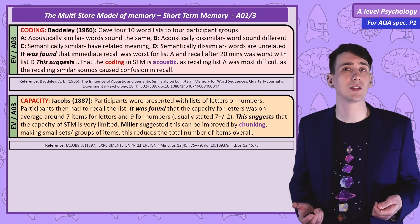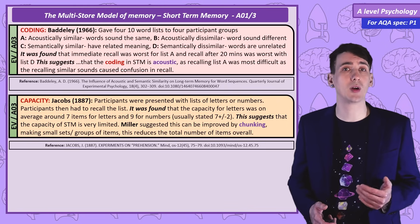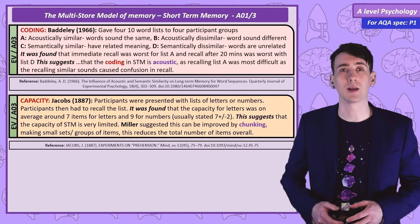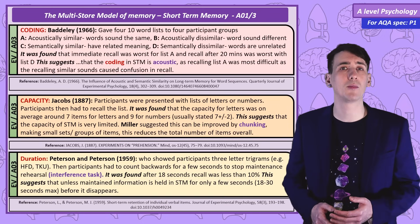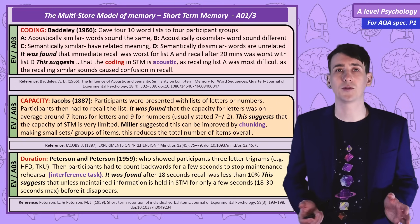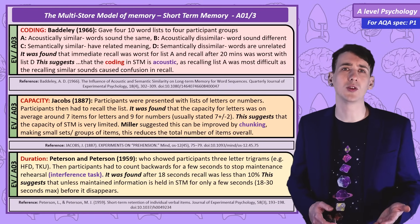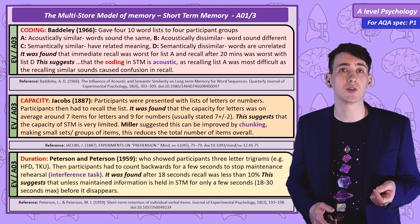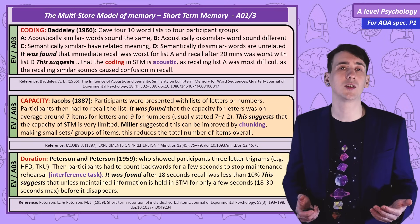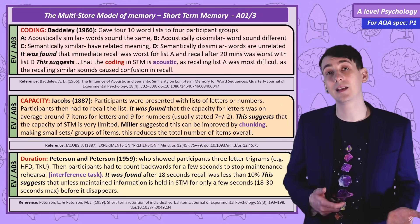This research showed that the capacity of short-term memory is small. However, Miller points out that we can increase the effective capacity of short-term memory by chunking — making small sets or groups of items, effectively reducing the number of items overall. For duration, Peterson and Peterson asked participants to recall trigrams — sets of three letters with no meaning, such as HFD or TKU — using an interference task of counting backwards to prevent maintenance rehearsal. It was found that the duration of short-term memory was between 18 and 30 seconds.